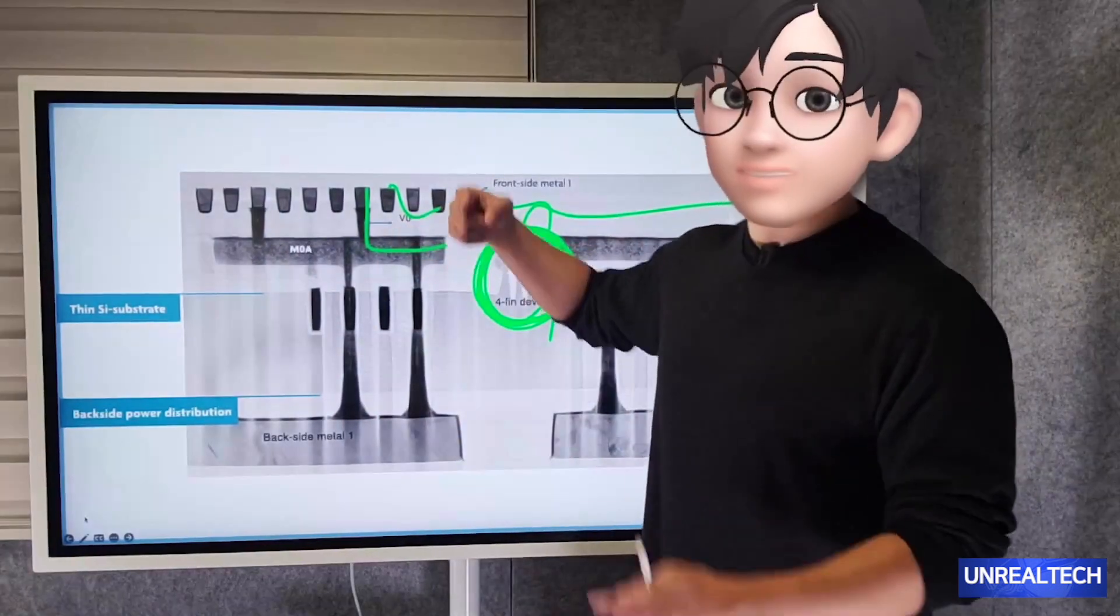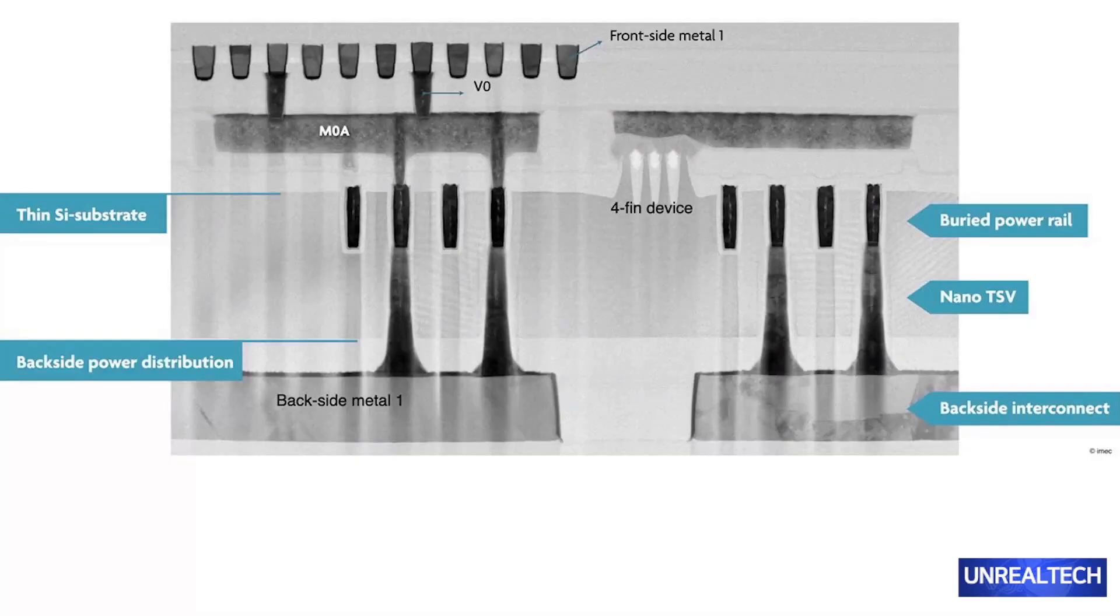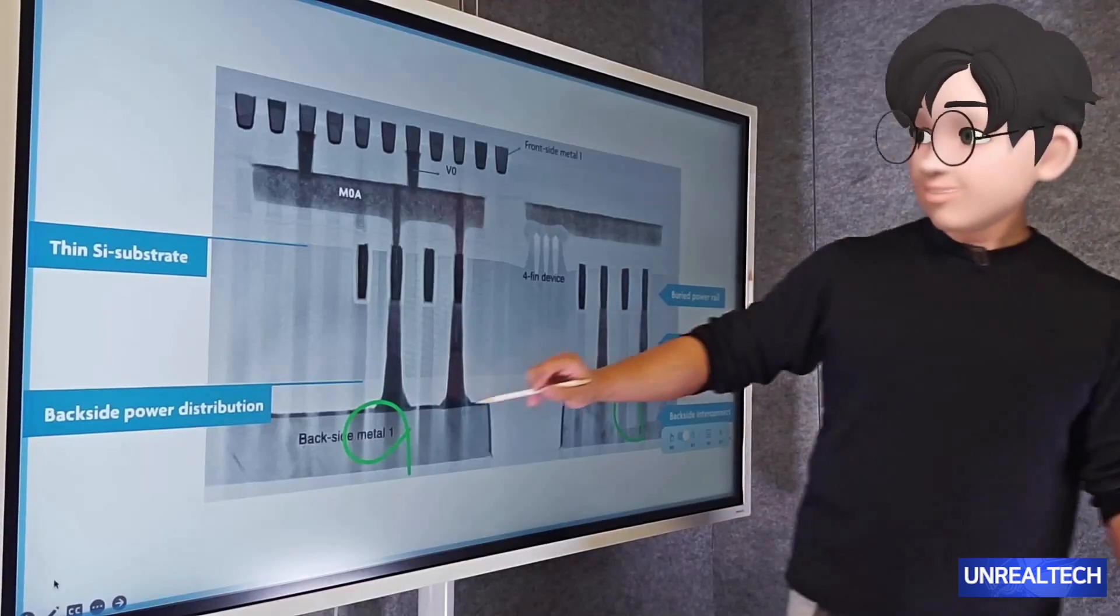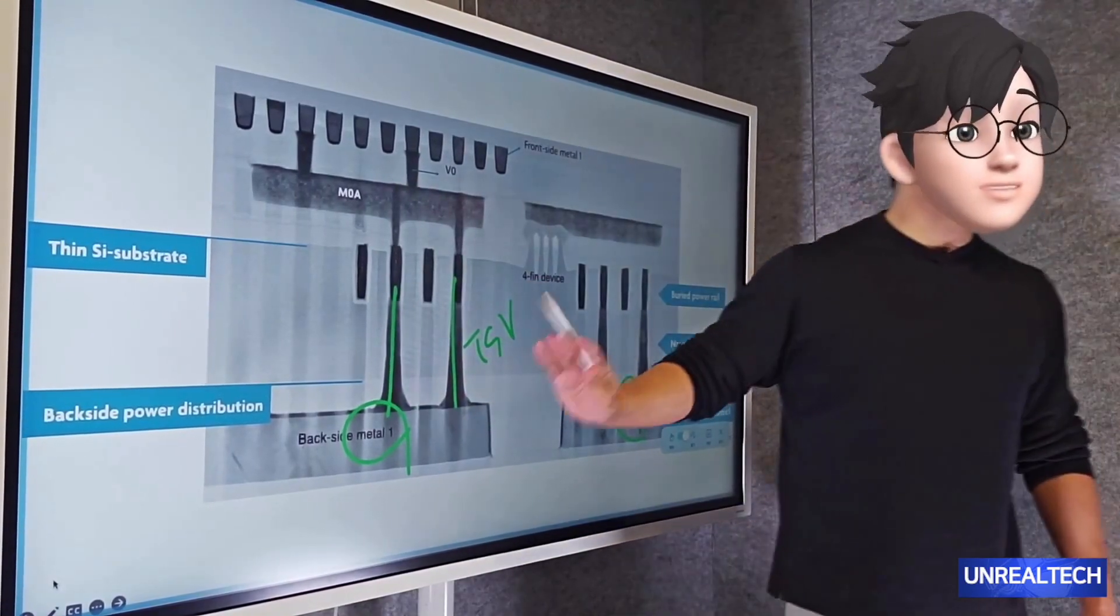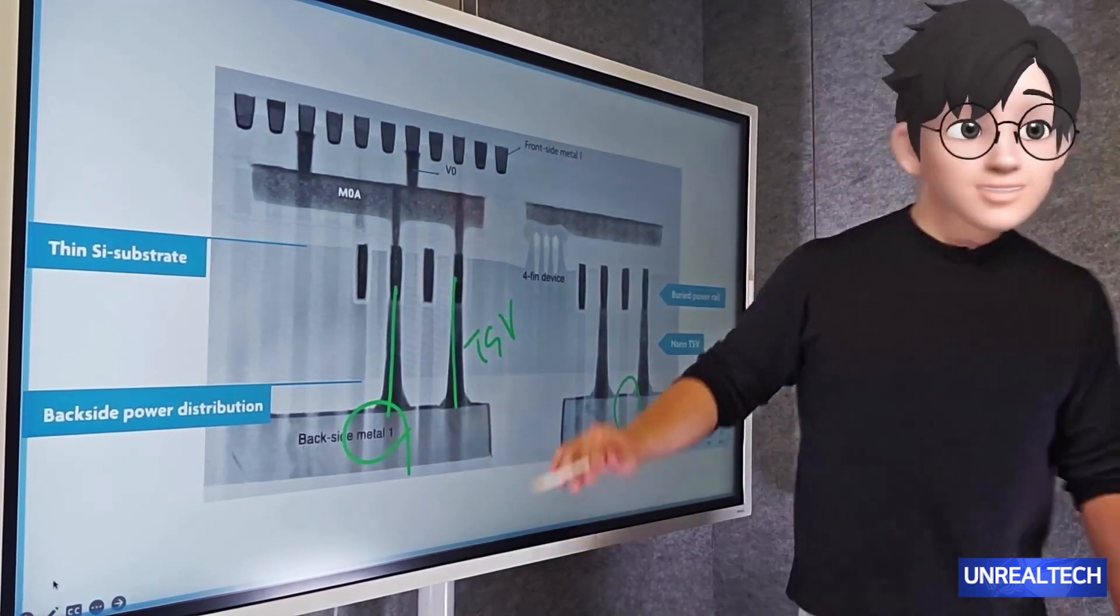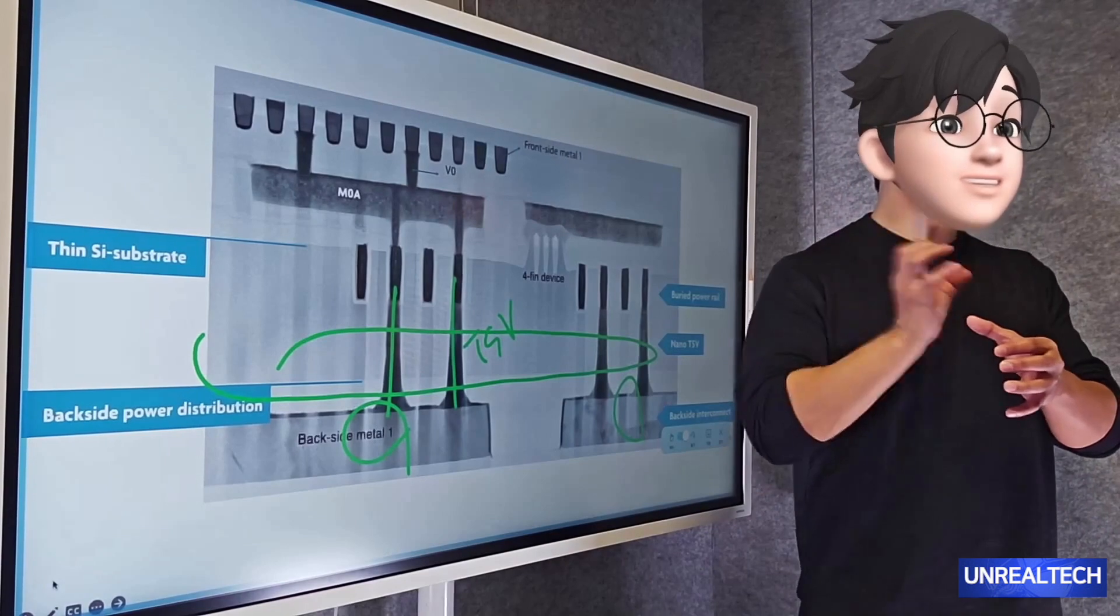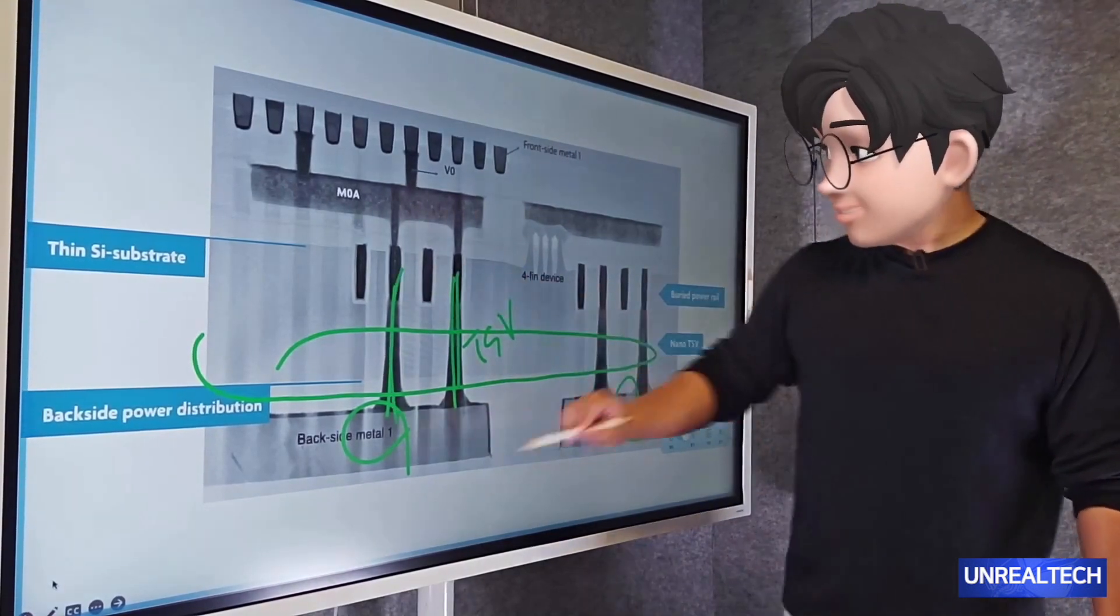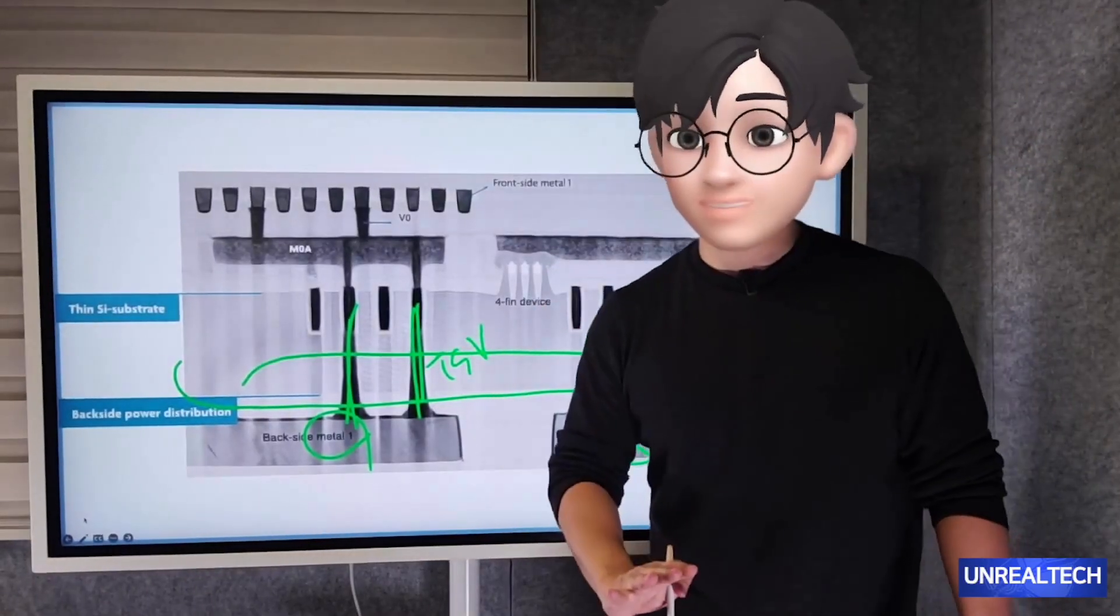Previously, both signal and power connections were managed from the top, making the procedure quite intricate. However, nowadays, while signal wires are still handled from above, the metal layer underneath is employed for power distribution. Power will be supplied through this TSV, which means that power will be delivered from below by drilling through the wafer. To achieve this, the wafer needs to be carefully thinned at the edges, which involves a delicate and precise process. By meticulously thinning the backside and drilling through the TSVs, power can be delivered from both the top and bottom, necessitating the completion of both processes.